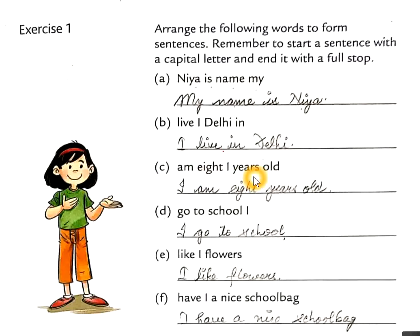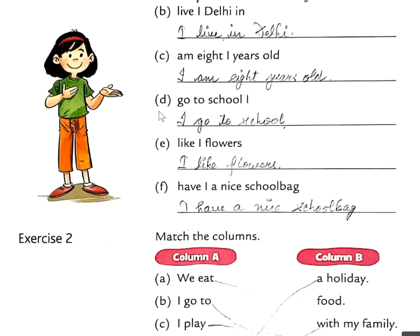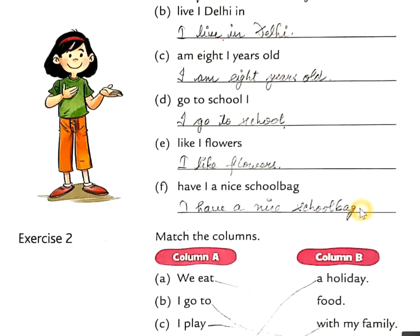C: Am 8 I years old → I am 8 years old. Full stop. D: Go to school I → I go to school. Full stop. E: Like I class → I like class. Full stop. F: Have I a nice school bag → I have a nice school bag. Full stop.